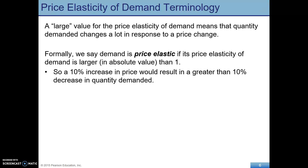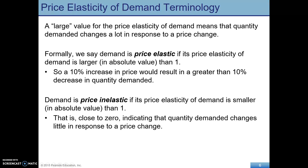If we have a large elasticity after we take the absolute value, that means that quantity demanded is going to be very responsive to a change in price — a small change in price has a big impact on quantity demanded. Demand is going to be price elastic if the price elasticity is larger in absolute value than 1. So if that number is bigger than 1, a 10% increase in price would have a greater than 10% change in quantity demanded, because that fraction is bigger than 1, so bigger on the top than on the bottom.